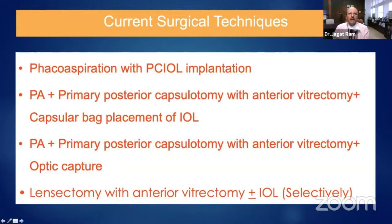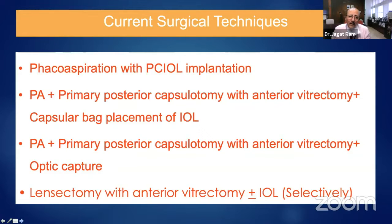What we choose is phacoaspiration and PCIOL implantation, particularly in older children — eight years and older. Primary posterior capsulotomy with anterior vitrectomy and capsular bag fixation of IOL is what we do in the majority — over 90% of cases. Usually six years and younger, we perform primary posterior capsulotomy. For six to eight years, we also judge compliance for follow-up. Lensectomy and anterior vitrectomy is done for those children with microphthalmia or microcornea where IOL implantation is contraindicated.